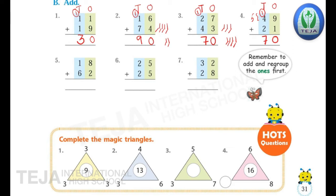5th question: 18 plus 62. Write the place values — 1's and 10's. The digits in the 1's place are 8 and 2. Keep 8 in mind, count 2 more: 9, 10. So 8 plus 2 is 10 — carry 1 in the 10's place and write 0 in the 1's place. In the 10's place: 1 plus 1 plus 6. 1 plus 1 is 2, then 2 plus 6 — keep 6 in mind, count 2 more: 7, 8. Write 8, so the answer is 80. 18 plus 62 is 80.